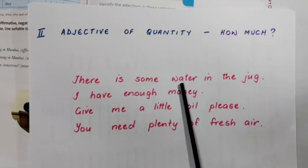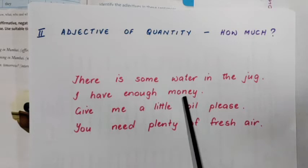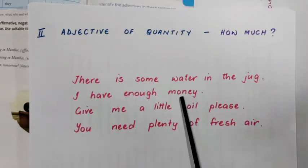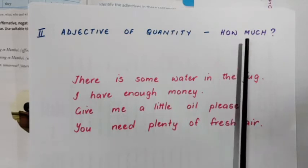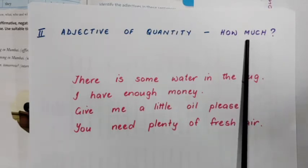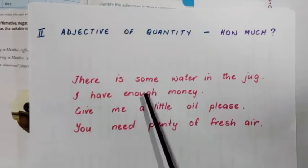The adjective of quantity is used with nouns that cannot be counted. Water is uncountable, money is uncountable — if you want to count money you use rupees, dollars, or pounds. Oil is uncountable, fresh air is uncountable. So you ask 'how much' when you want to find out the adjective of quantity. These adjectives of quantity are used with nouns that cannot be counted.